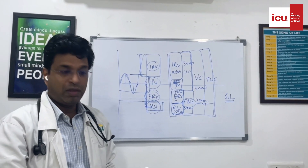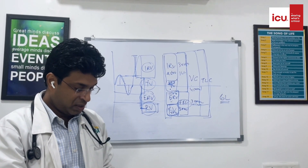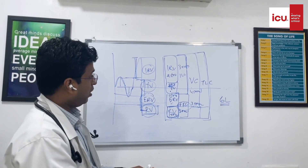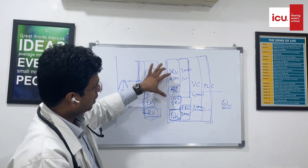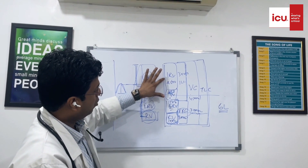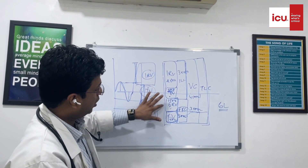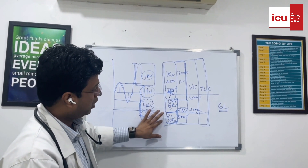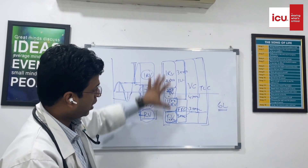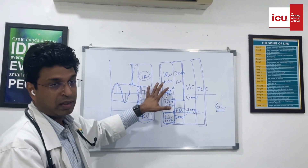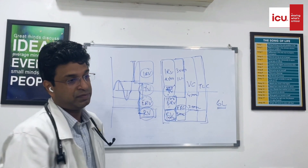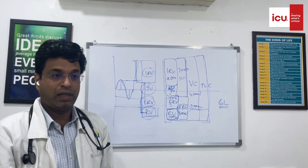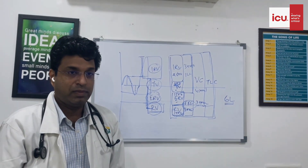Only concentrate on these four parts: inspiratory reserve volume, tidal volume, expiratory reserve volume, and residual volume. If you know these, you can derive any lung volume or capacity. Understood? Thank you.